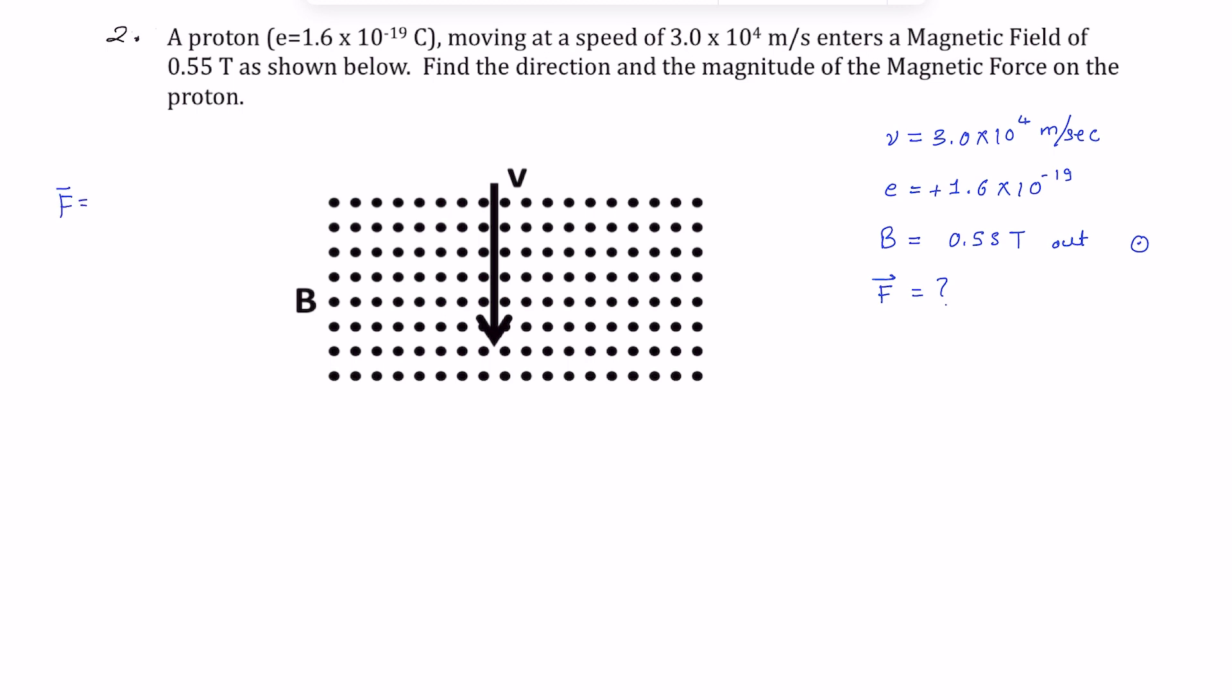But we don't have any electric field here, so it's just Q times V cross B. Now as you can see, V is in this direction and magnetic field is out of the page. So the angle between V and B is 90 degrees.